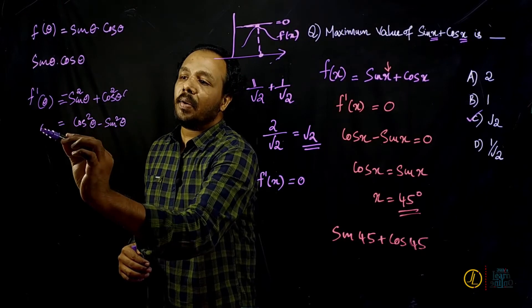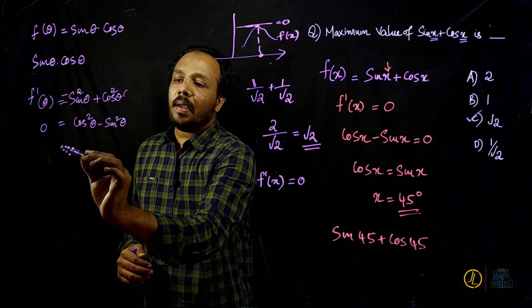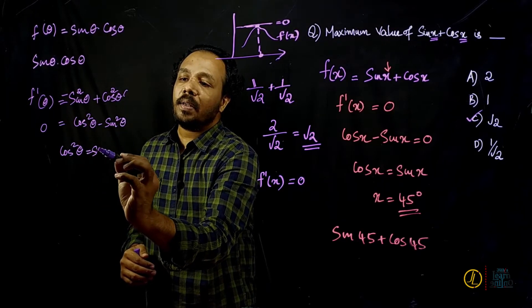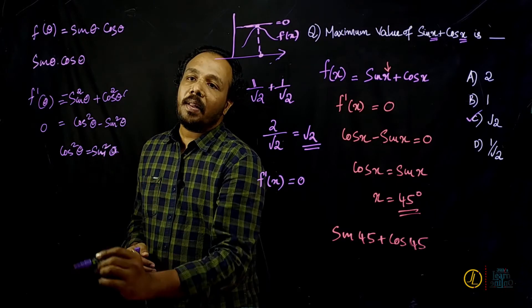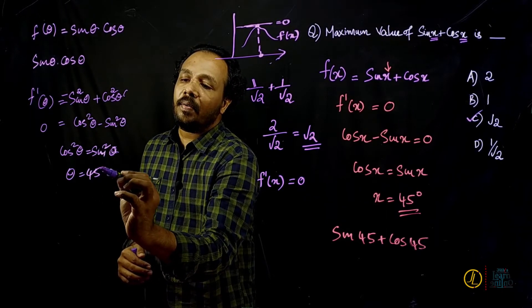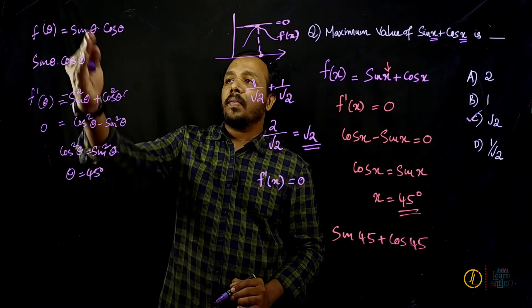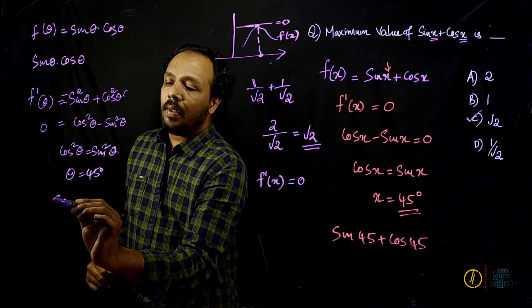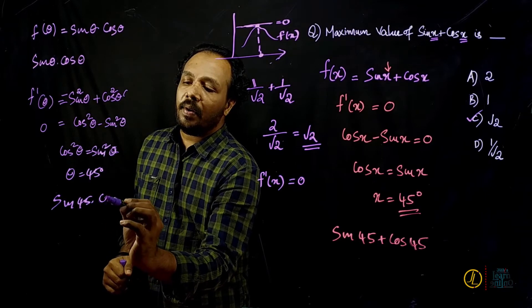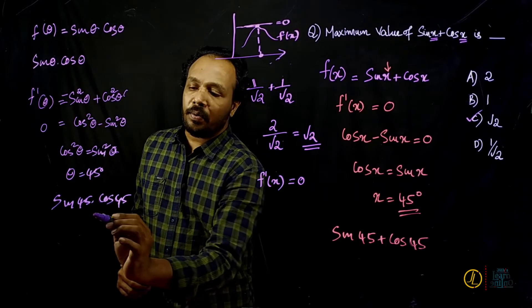Setting f'(θ) equal to 0: cos²θ equals sin²θ. This gives θ equal to 45 degrees. Then the maximum value is sin45 into cos45.